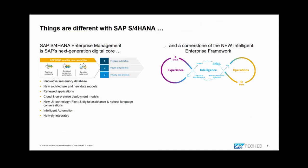When you come from ERP, a lot of things are different with S/4HANA. S/4HANA is a next-generation digital core — enterprise management — and it exclusively utilizes SAP's in-memory technology: the HANA database. This gives us the ability to allow real-time processing of data and combine transactional processing with real-time analytics, so we have both in one system.